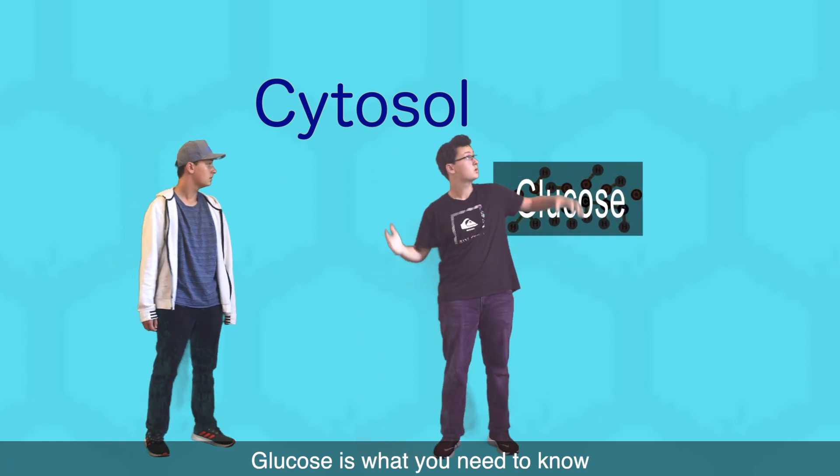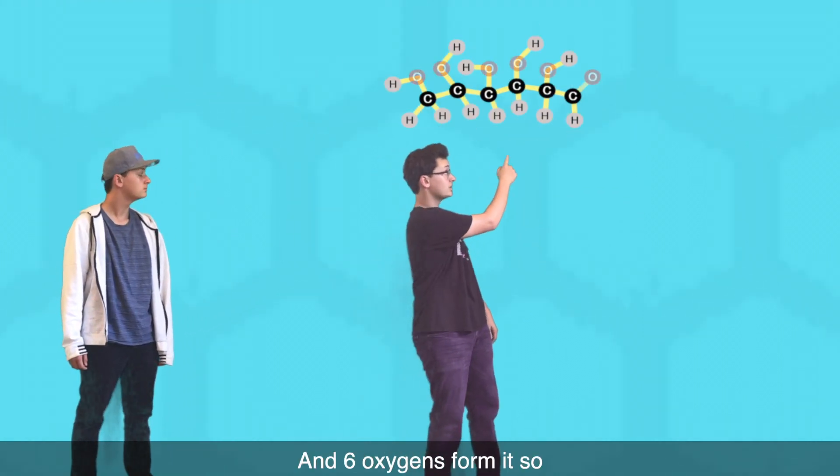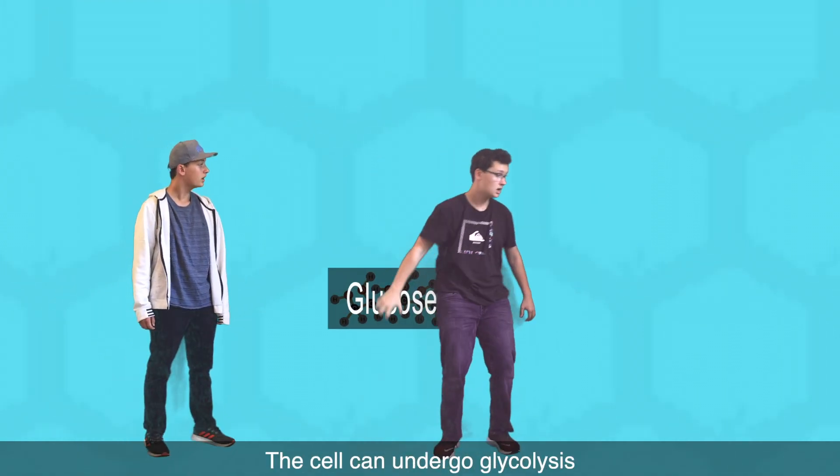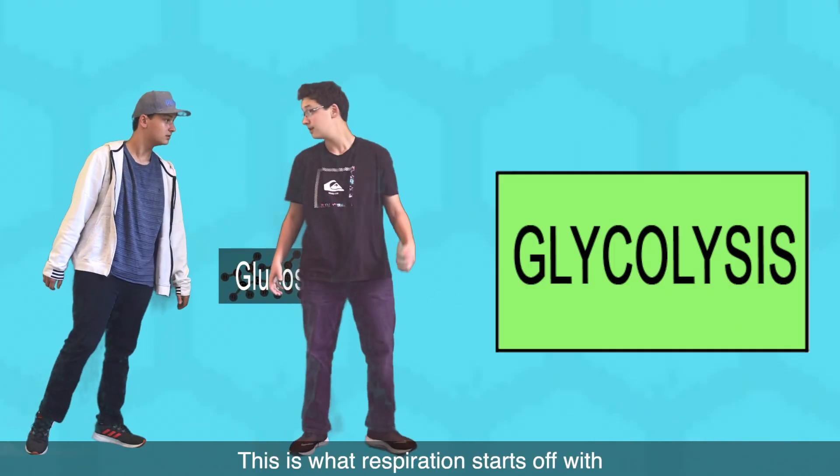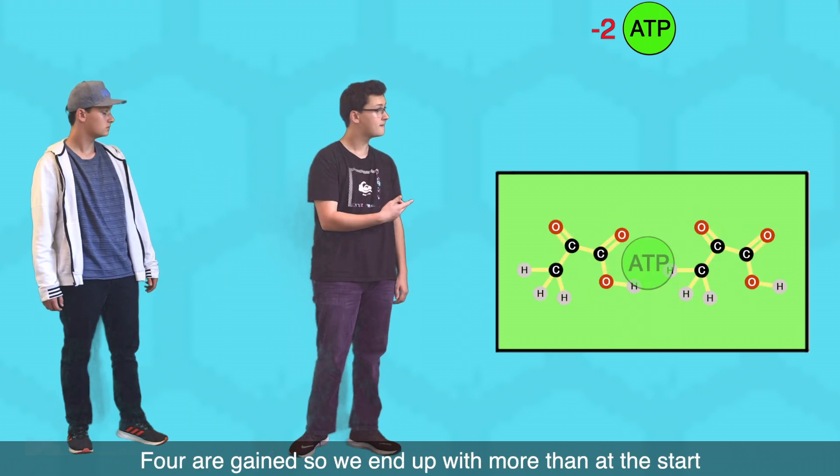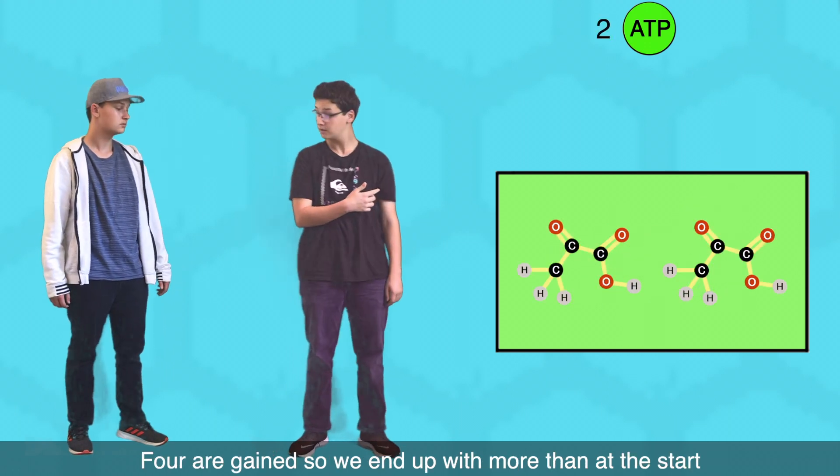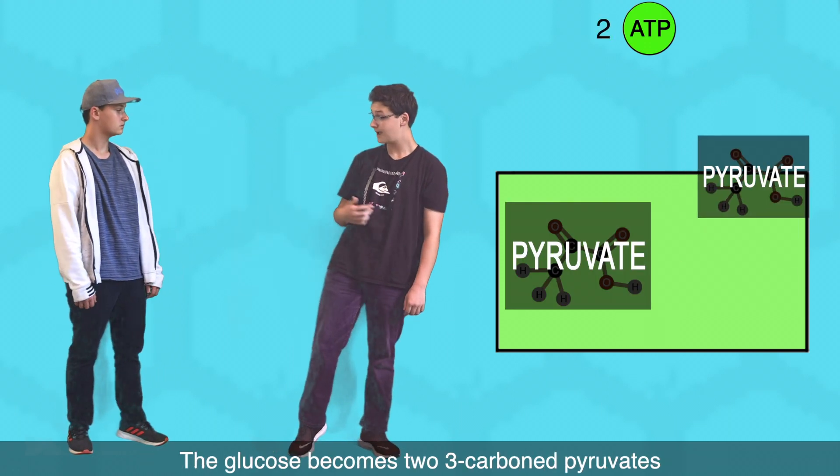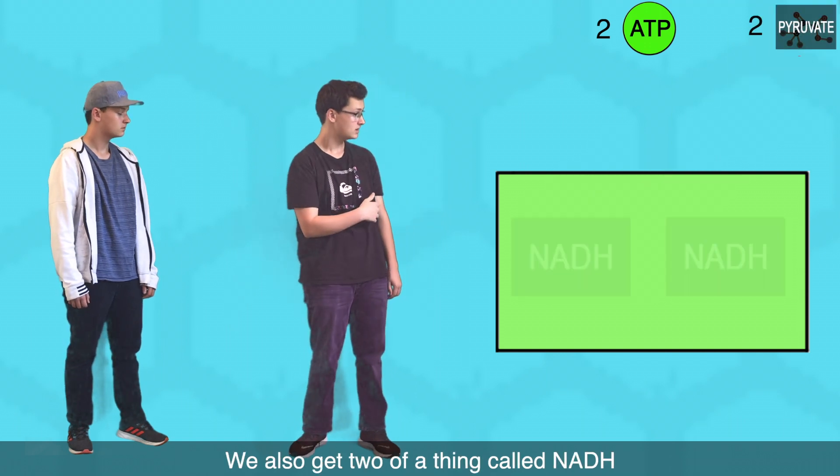It starts up in the cytosol. Glucose, what you need to know. Carbon-6, 12-hydrogen and 6-oxygen form it so the cell can undergo glycolysis. Okay. This is what respiration starts off with. Two ATP I use to break the glucose apart. Four are gained so we end up with more than at the start. The glucose becomes 2 3-carbon pyruvates. We also get to have a thing called NADH.